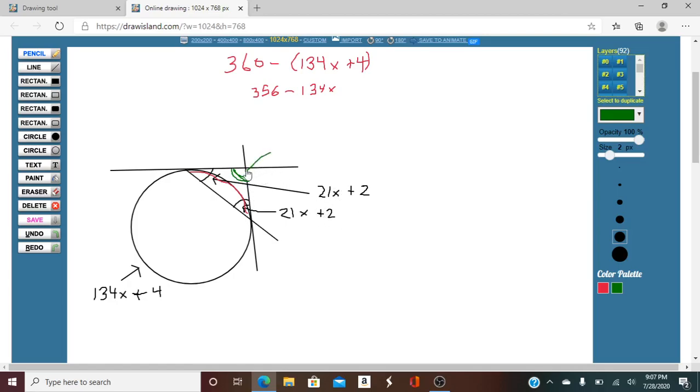So this green angle is going to be 180 minus 42X minus 4. So it's going to be 176 minus 42X, it's going to be this angle here.